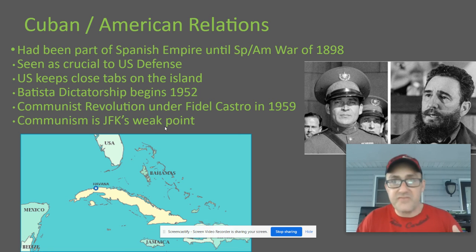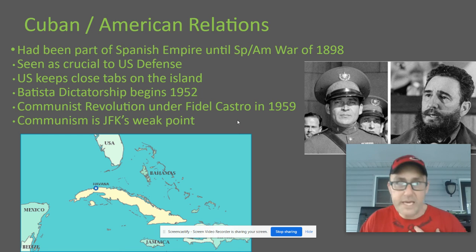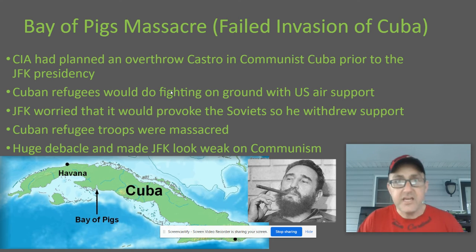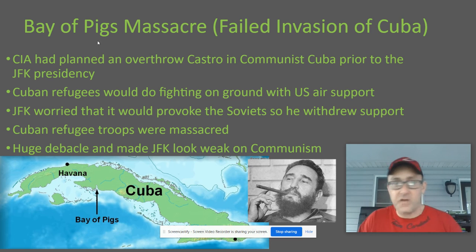Going into the election of 1960, Kennedy is very well liked — he's seen as a progressive guy with new ideas, trusted on domestic policy. But his Achilles heel was that a lot of people questioned whether he was going to be tough enough to stand up to communism. That's already his weak point going into his presidency. Now this is the stuff I want you to have in your notes today. The first big event from the Kennedy presidency is the Bay of Pigs — kind of an ominous-sounding title — which is basically a failed invasion of Cuba. Make sure you put a heading in your Cold War notes called the Bay of Pigs.